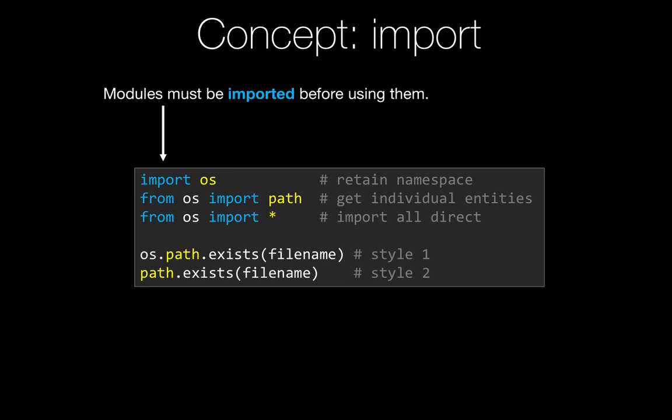Or we can import individual entities — functions, variables, classes, and so on out of a module, like from OS import path. That's okay. It's not amazingly good, but it's not bad, and that lets us write style too.